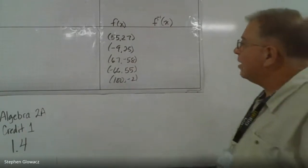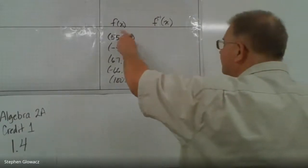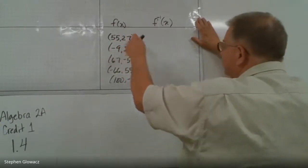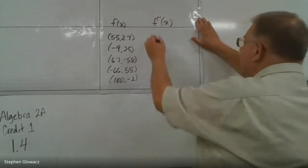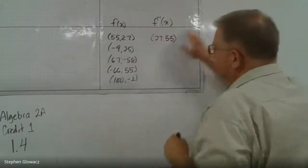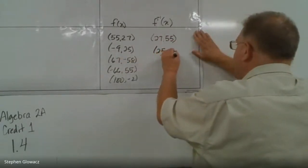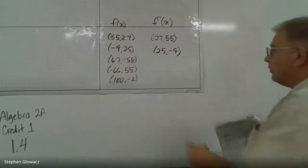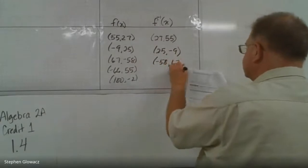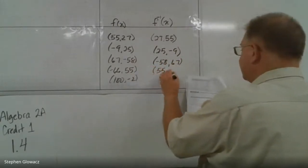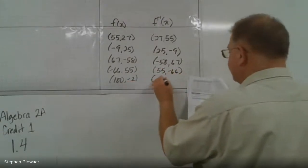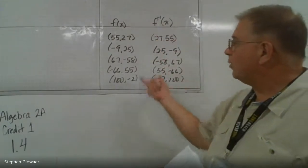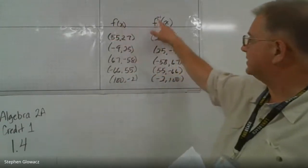The table shows the points that represent f(x). To complete the table for f⁻¹(x), we reverse the ordered pairs. If (55, 27) is on f(x), then (27, 55) is on the inverse. Likewise, (-9, 25) becomes (25, -9). Notice there are no sign changes — only the numbers switch places. We continue: (67, -58) becomes (-58, 67), (-66, 55) becomes (55, -66), and (100, -2) becomes (-2, 100).